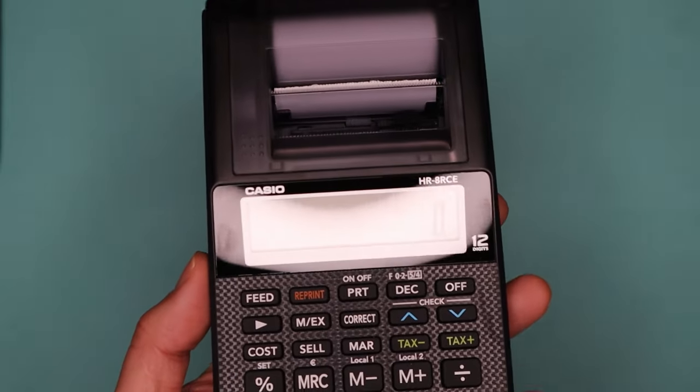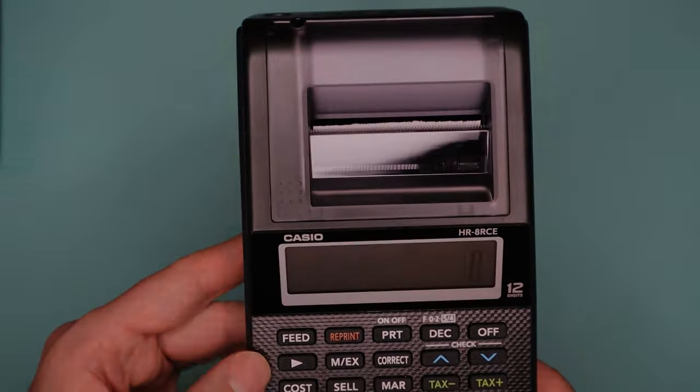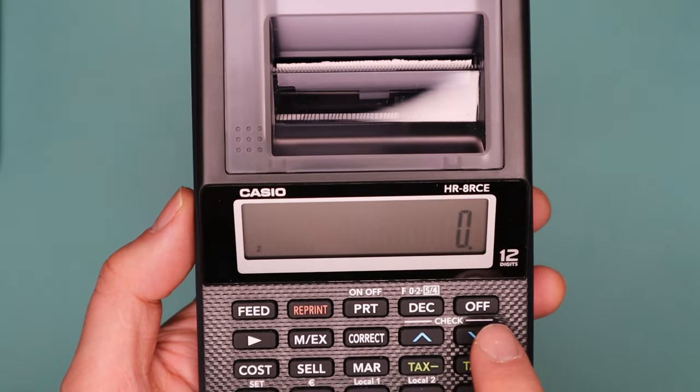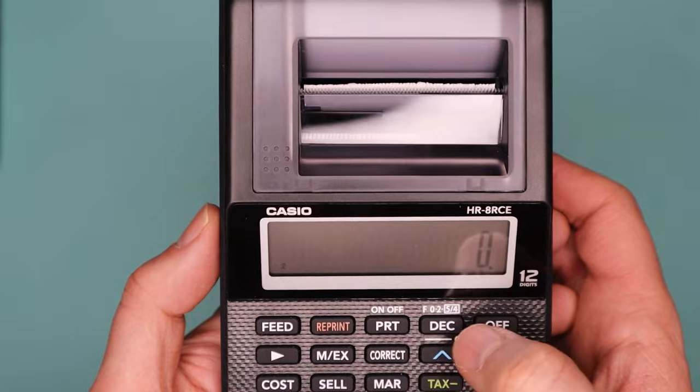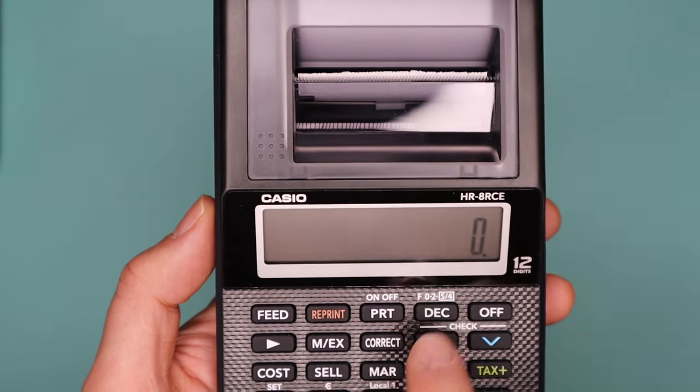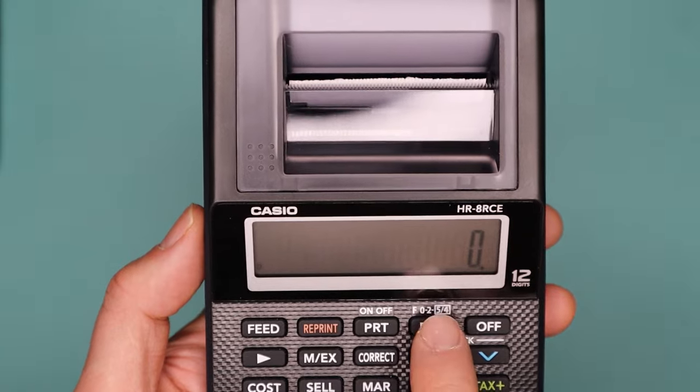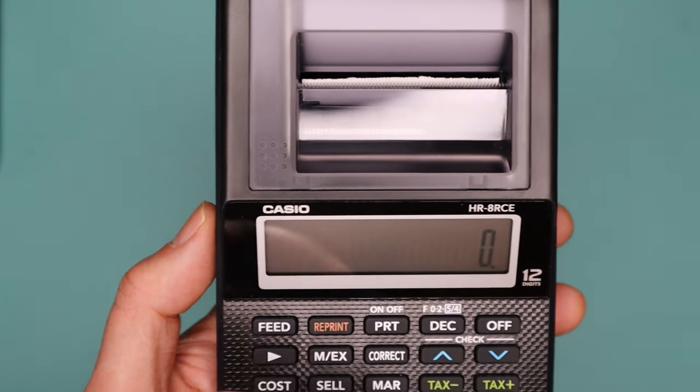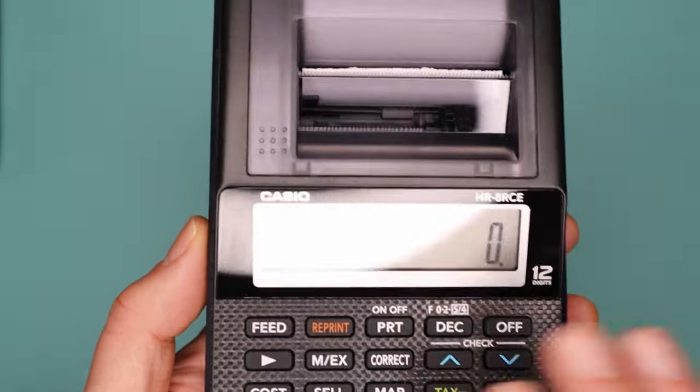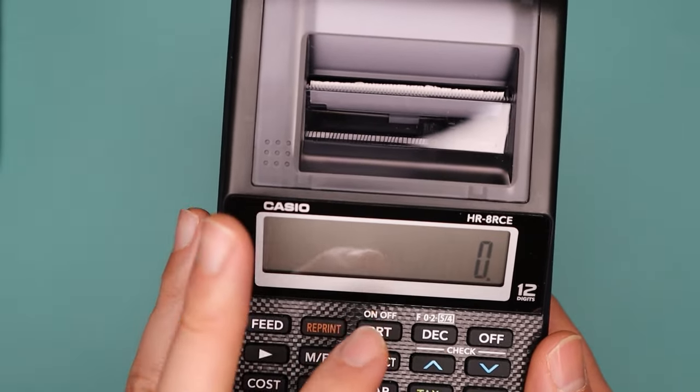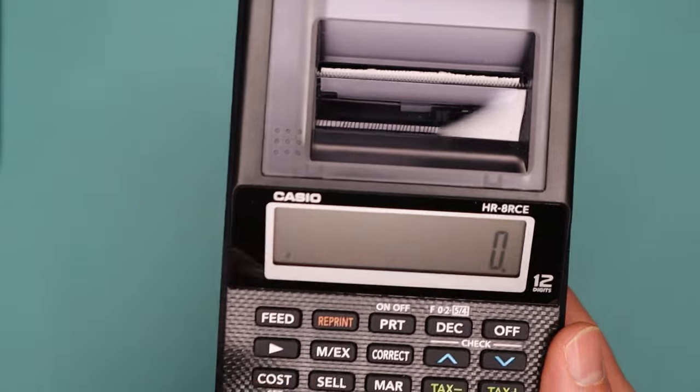So I'll just show you. I also have it set to two decimal places there. There's the button here, decimal, next to the off. So if you press it, it toggles between no decimals, zero decimals, two decimals, and obviously a free floating answer. So I set it to two decimals.